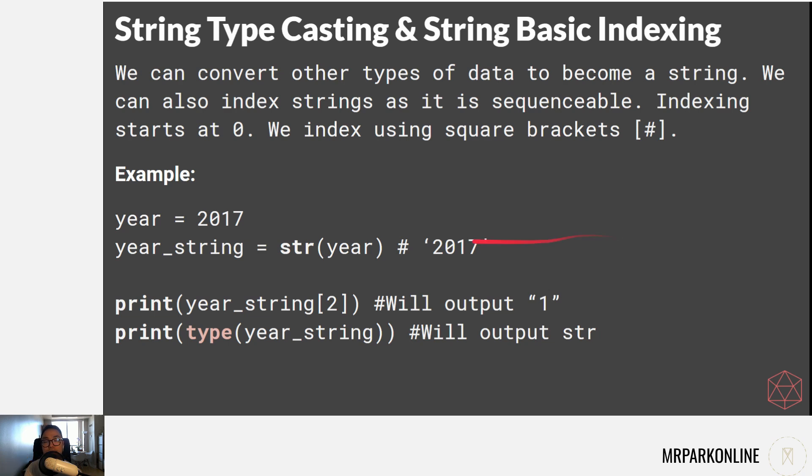It will make it indexable and sliceable after we turn it into a string. In this example, year is set to 2017. We can get a string version of year by converting it to a string, which helps us because I can't index an integer. If I didn't convert it and just tried to index 2017, it would give me an error. That's one nice use of converting something to a string, and it also helps us use other methods and functions that we're going to learn.